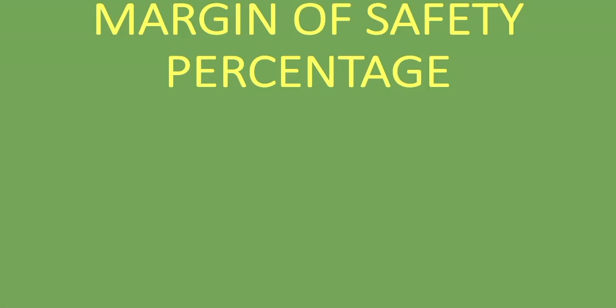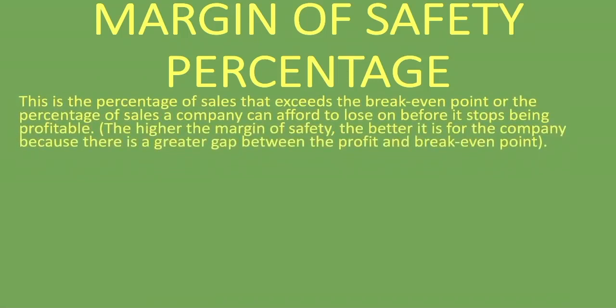We also looked at other cost-volume-profit analysis, which you'll find in the description below. The margin of safety percentage is the percentage of sales that exceeds the break-even point — or the percentage of sales a company can afford to lose before it stops being profitable. The higher the margin of safety, the better it is for the company, because there is a greater gap between profit and the break-even point.